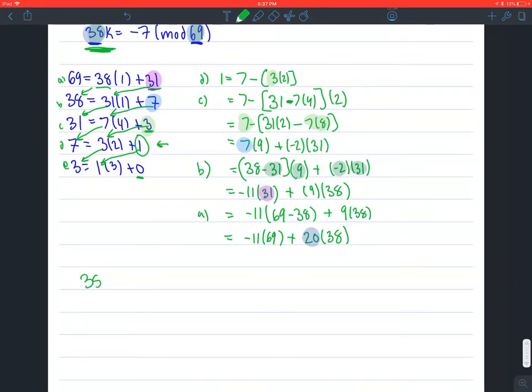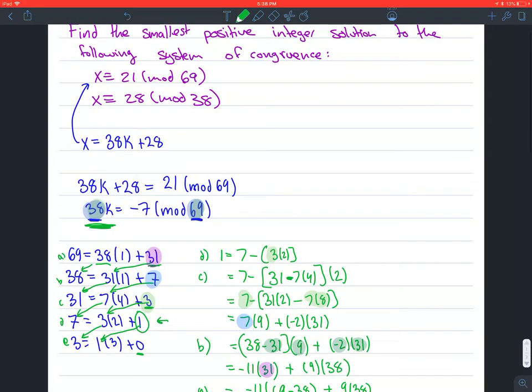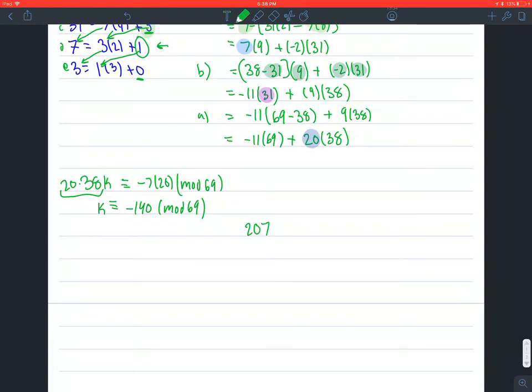So, we can do, so 38 times K times 20 equals negative 7 times 20, and then mod 69. And then that gives us, this is just going to be 1, because you're multiplying by the reciprocal. K is congruent. I can never remember if it's congruent or equal when you rewrite them, so don't take my word for how these are written. But in this case, it's like, the same thing, I guess. So negative 140 mod 69. So, if you take out your calculator, and you figure out how many times 69 goes into 140, and we need to go above 140. So 69 times 3 is 207. 69 times 2 is 138. So we're going to need 69 times 3, which is 207. So 207, and we need to figure out what the remainder from 140 is. So minus 140 is 67.